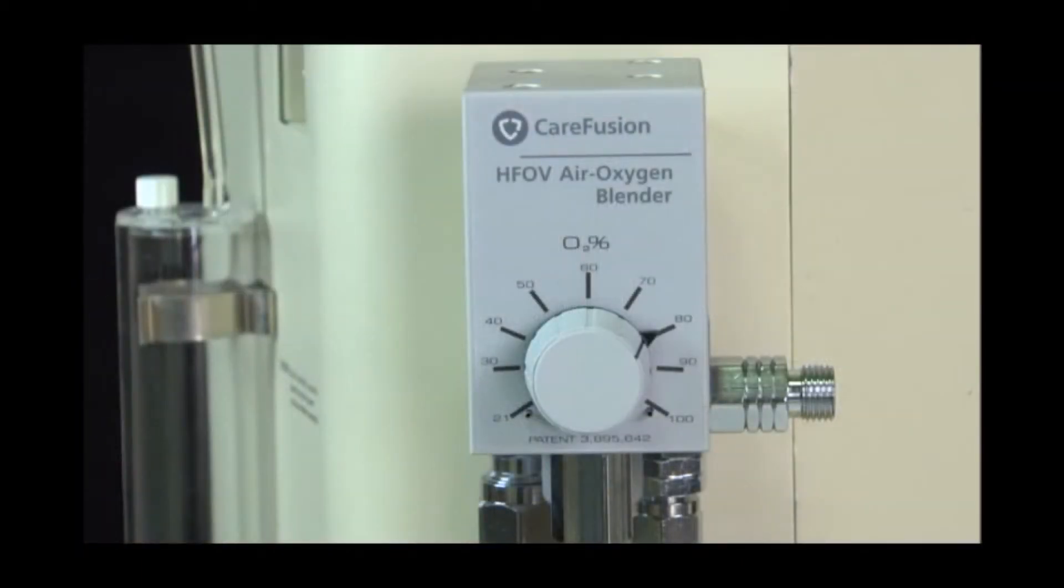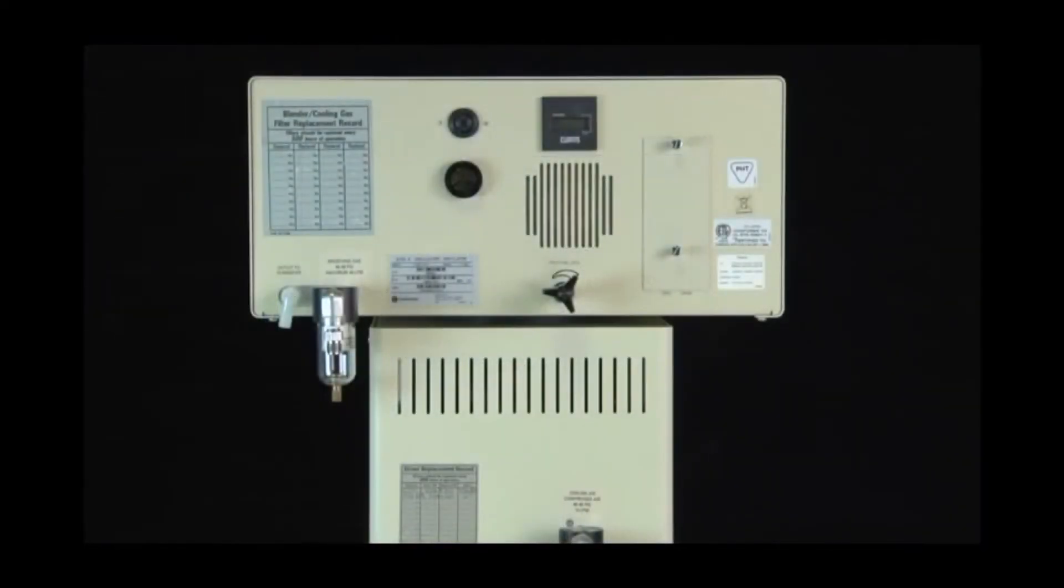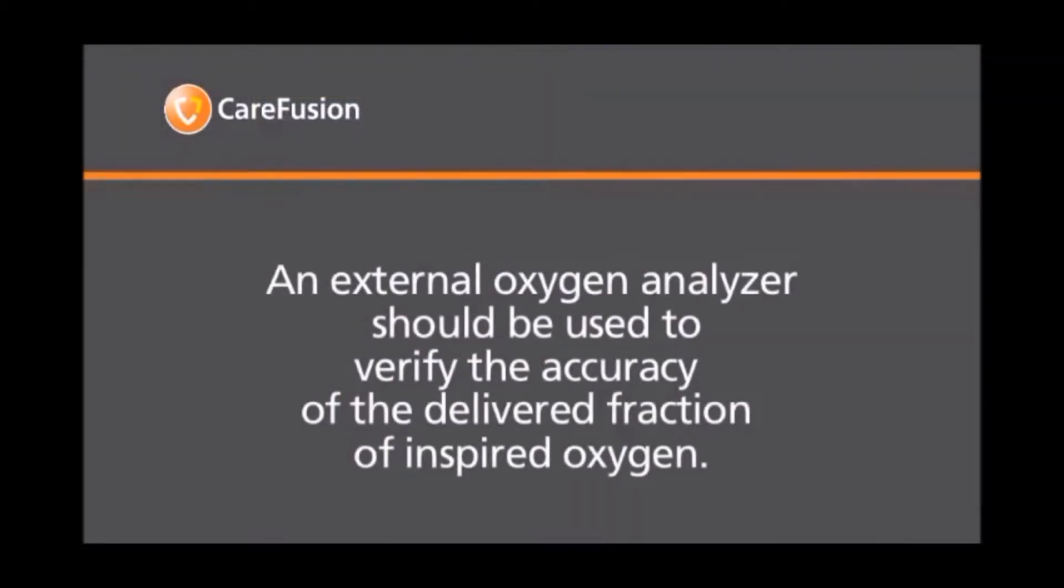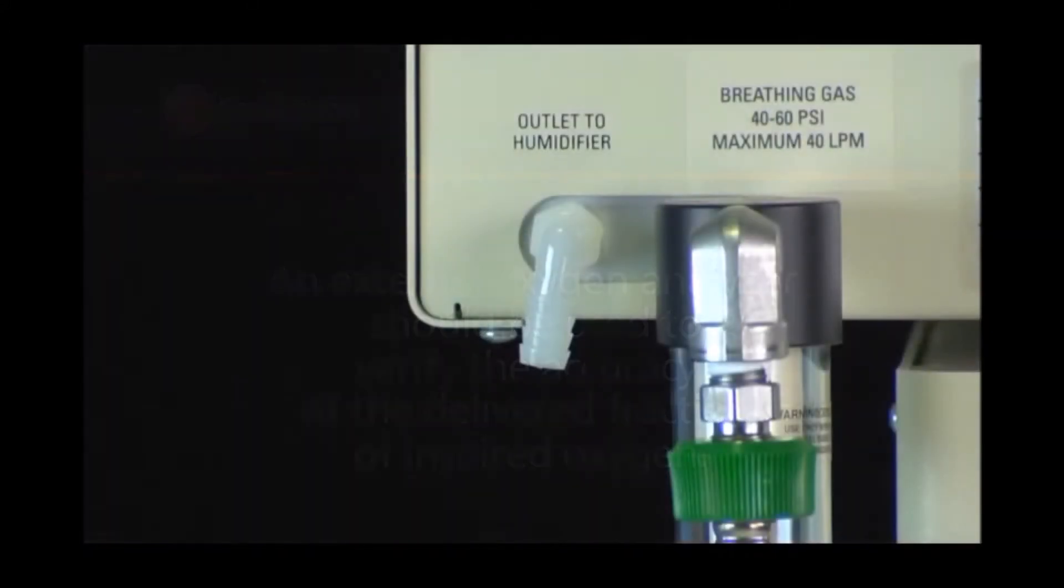An external blender must be used with the 3100B oscillator. The DISS connection for blended gases is labeled breathing gas. This fitting accepts a 50 psi input from the external blender. An external oxygen analyzer should be used to verify the accuracy of the delivered fraction of the inspired oxygen. The connector labeled outlet to humidifier provides patient breathing gas to the inlet of an external humidifier.